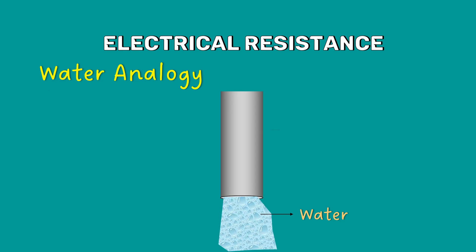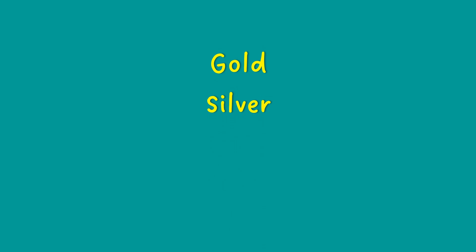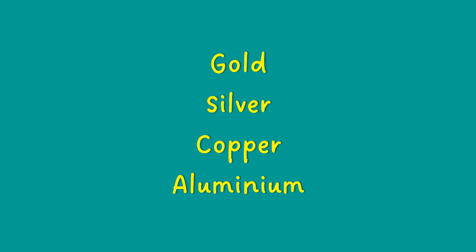Consider the water flowing through a pipe. The flow of water is compared to the current. Resistance refers to any obstacle that slows down the flow of water. All materials have some amount of electrical resistance. Materials like gold, silver, copper, and aluminium have low resistance.